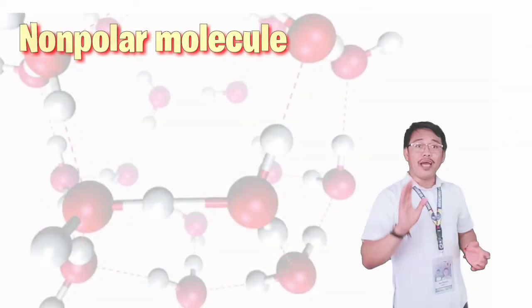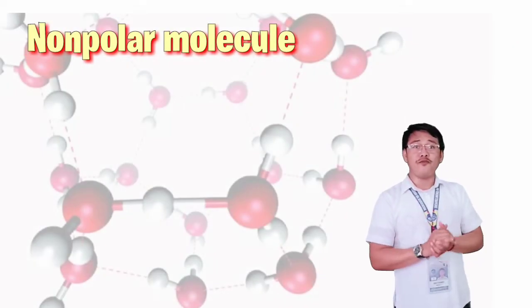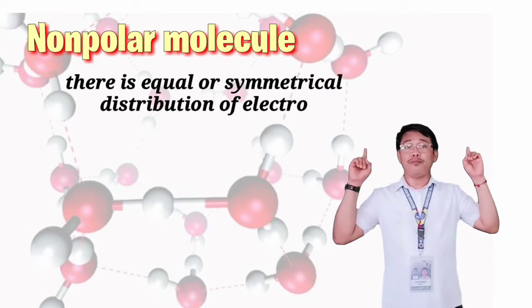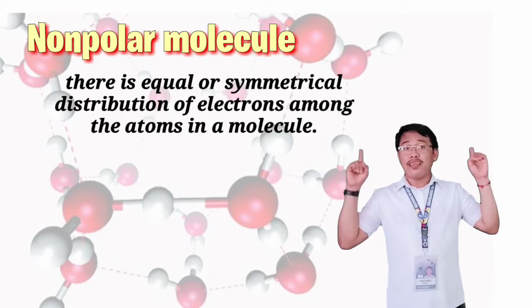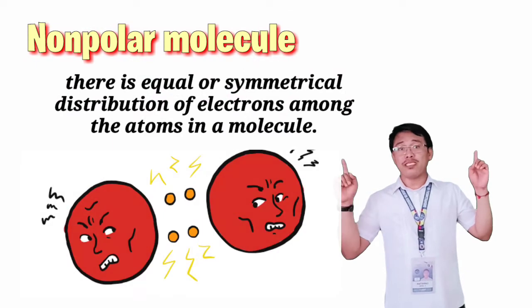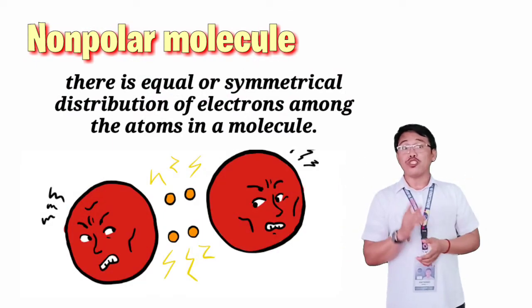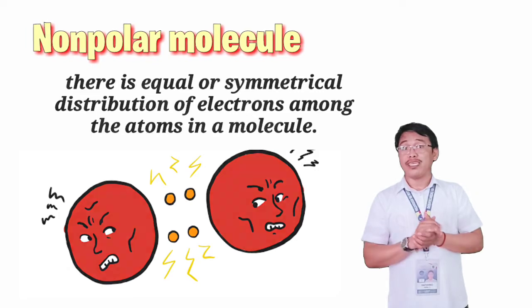Non-polar molecules, however, are formed when there is equal or symmetrical distribution of electrons. This happens when the bonding atoms have approximately equal ability to attract electrons on each side.